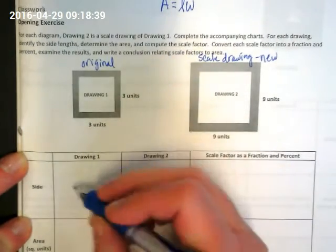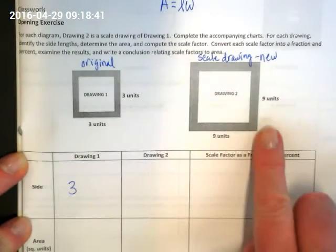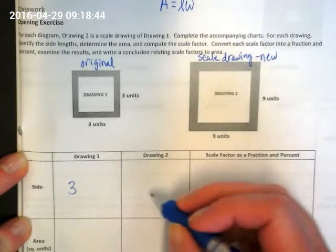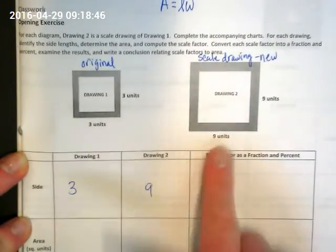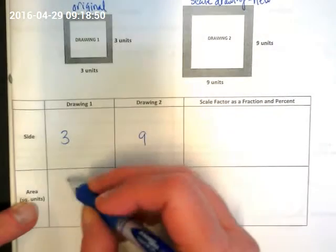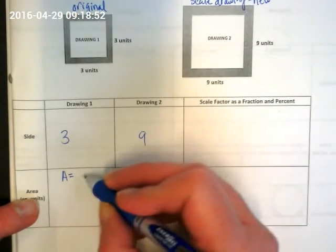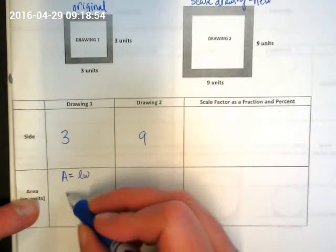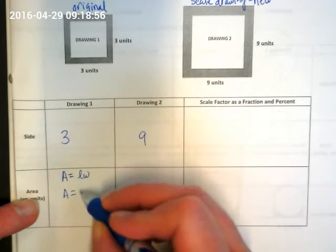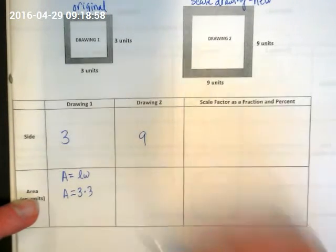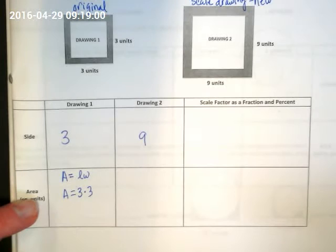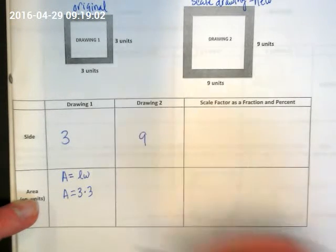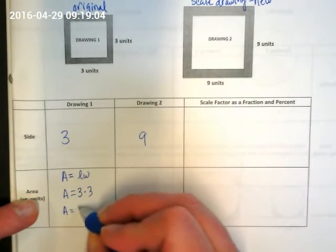Three units. For drawing two, what's our side length? Nine. Can we take those side lengths since they're squares and find the area? Well if area is equal to length times width, then in this case the area is going to be 3 times 3 because the length and width is both three. What is the area equal to then? Nine.